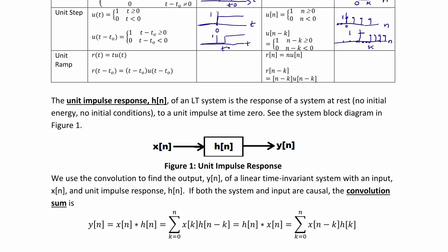The unit ramp is r of t equals t times u of t, which has a slope of 1 for t greater than 0 and 0 otherwise. The shifted ramp r of t minus t-naught equals t minus t-naught times u of t minus t-naught. In discrete time, r of n equals n times u of n, or r of n minus k equals n minus k times u of n minus k. In the continuous time sketch, we have the horizontal axis t and the vertical axis at 0, with a value of 0 up until time 0, then rising with a slope of 1.